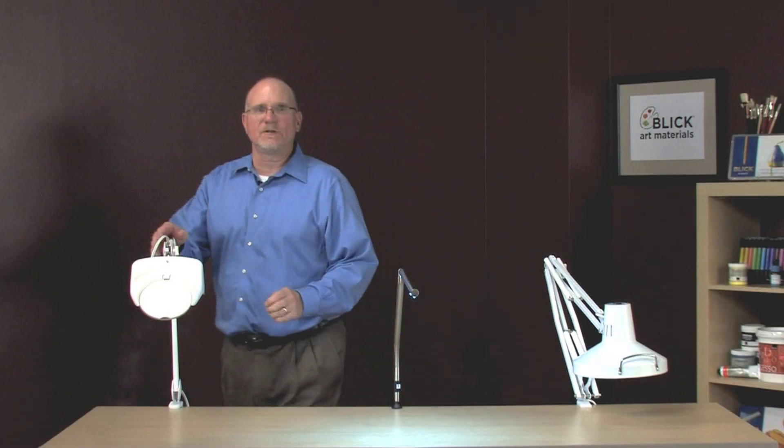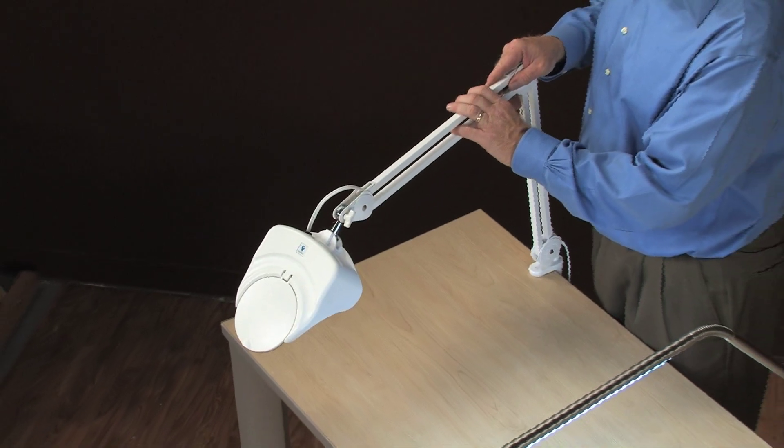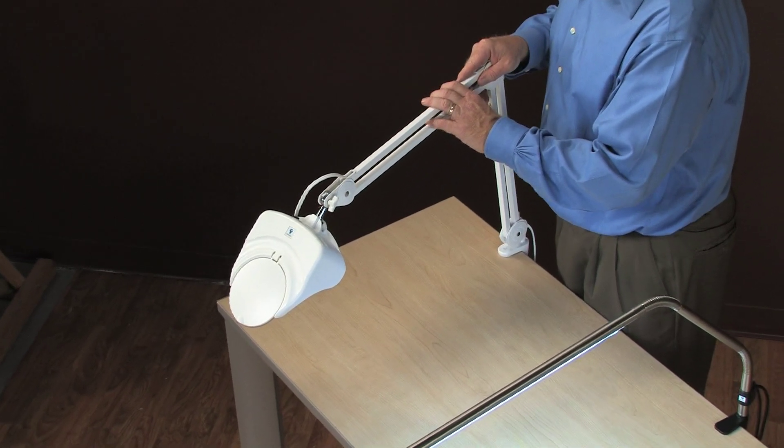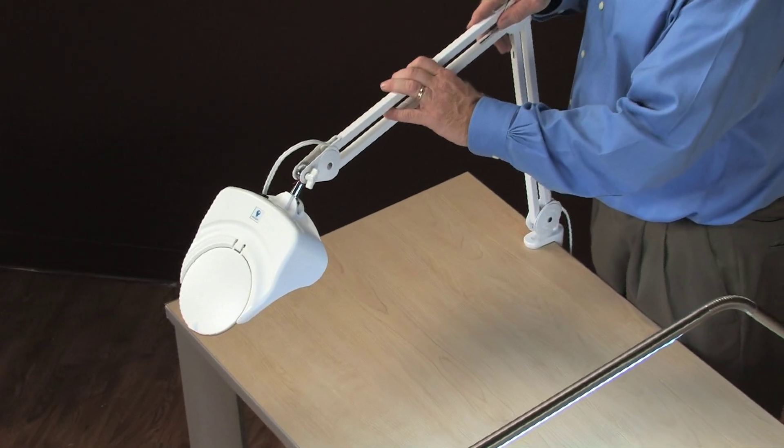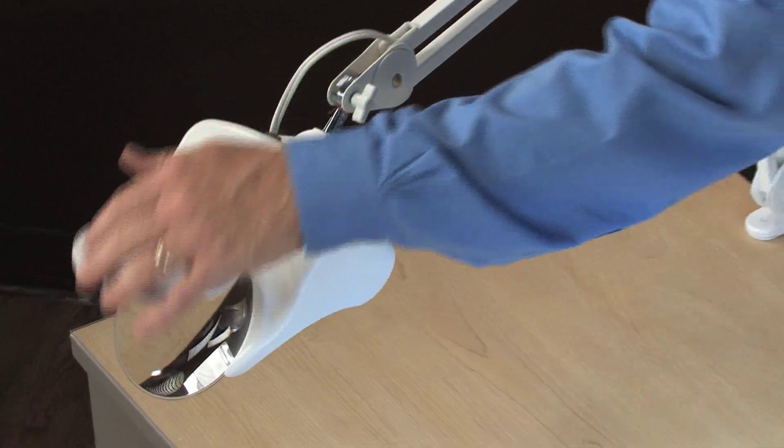Sometimes you need to see things a bit larger than they are. Here we have our 5-inch magnifying lamp that features a 3-diopter lens for 1.75 times magnification, a 13-watt bulb, a semi-rimless lens for optimal viewing of all details, and a protective removable cover.